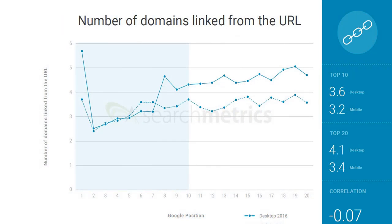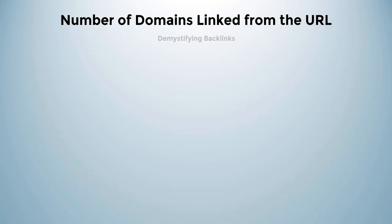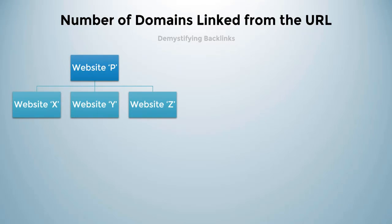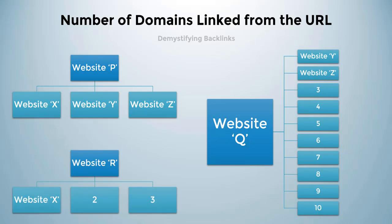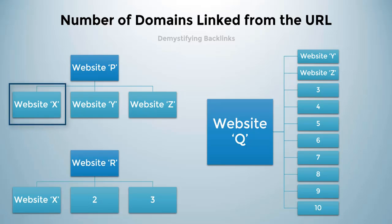Let's move on to the next SEO factor: number of domains linked from the URL. Let's assume that website P links to websites X, Y, and Z on one of its pages. Website Q links to Y, Z, and 8 other websites on one of its pages. Website R links to X and 2 others on one of its pages. In this case, website X would rank higher than website Y and Z.